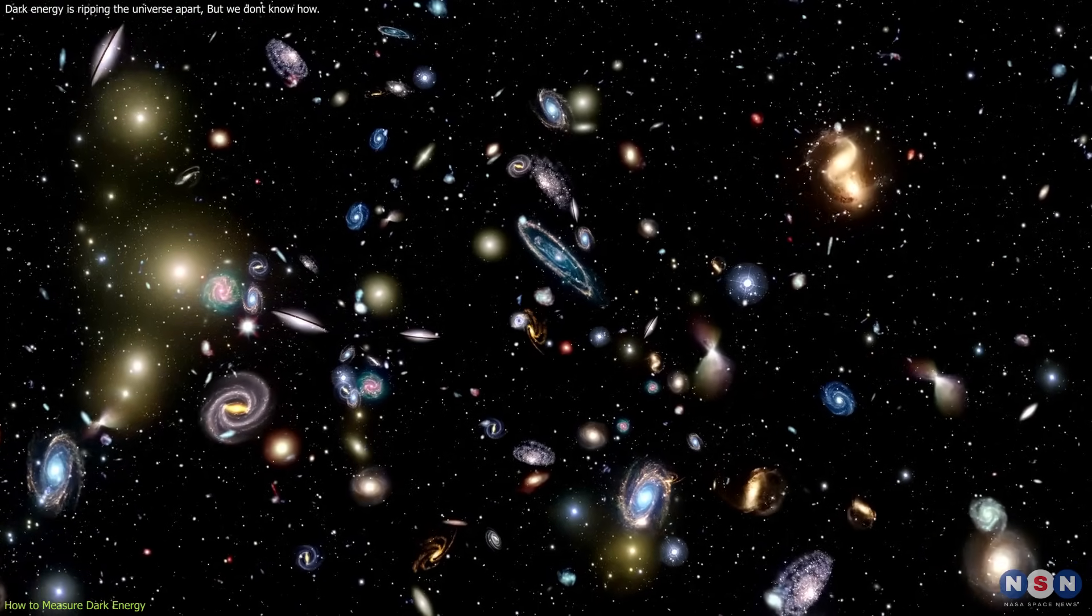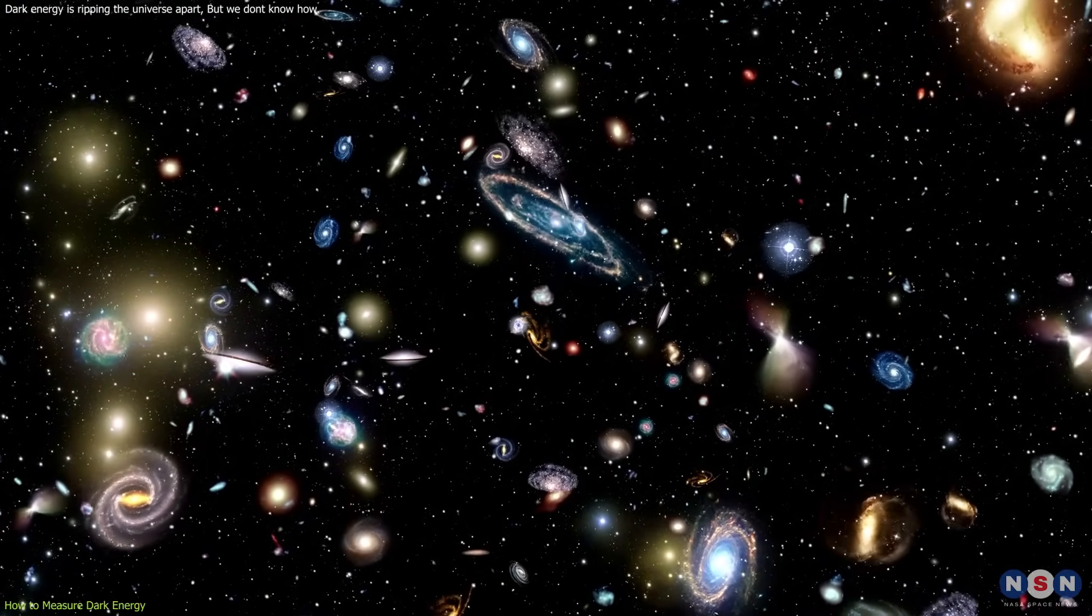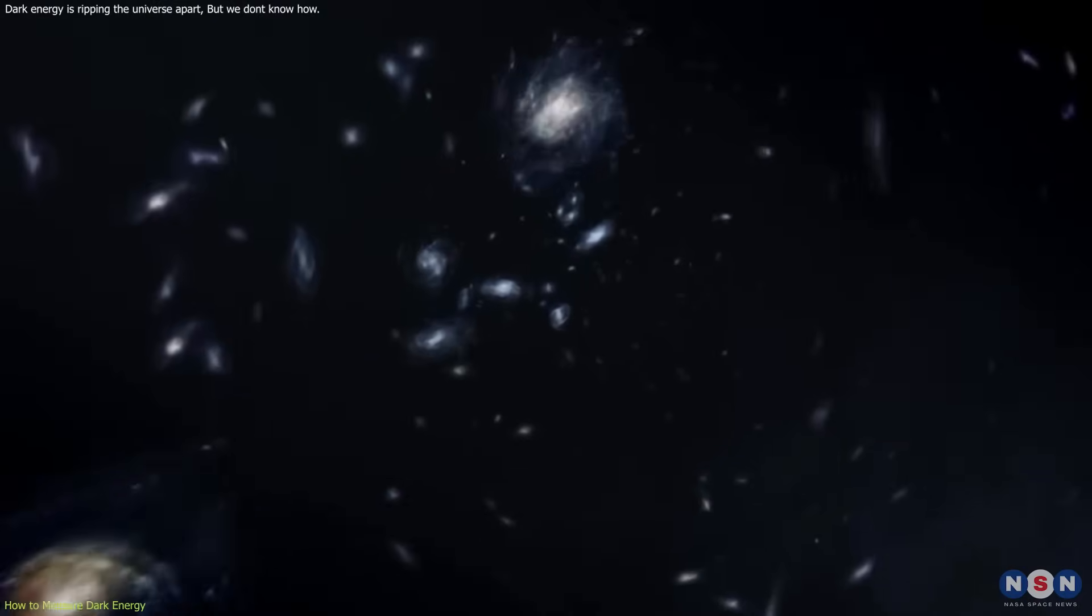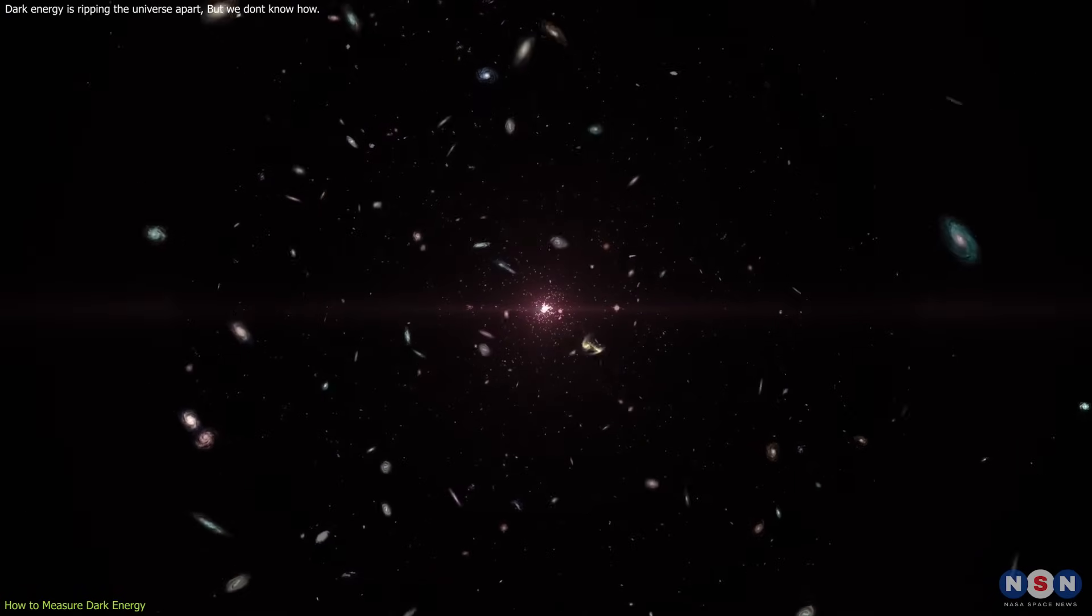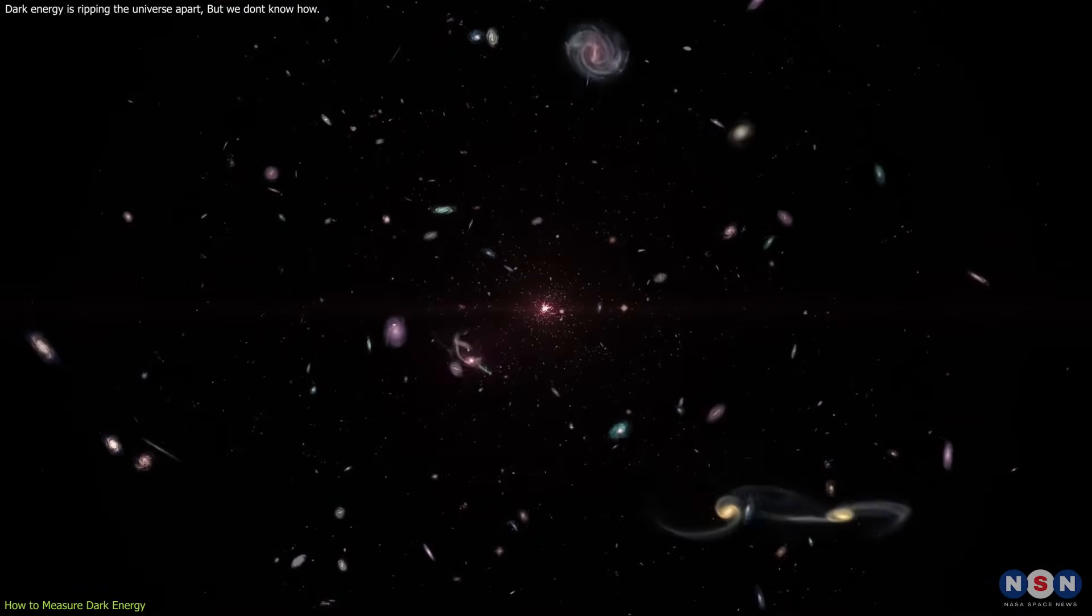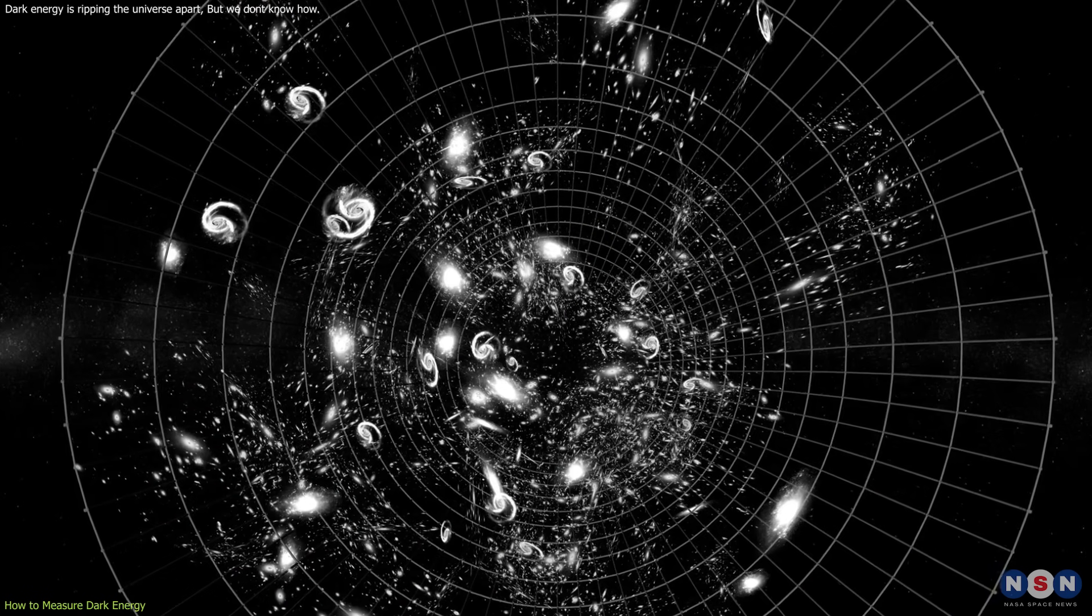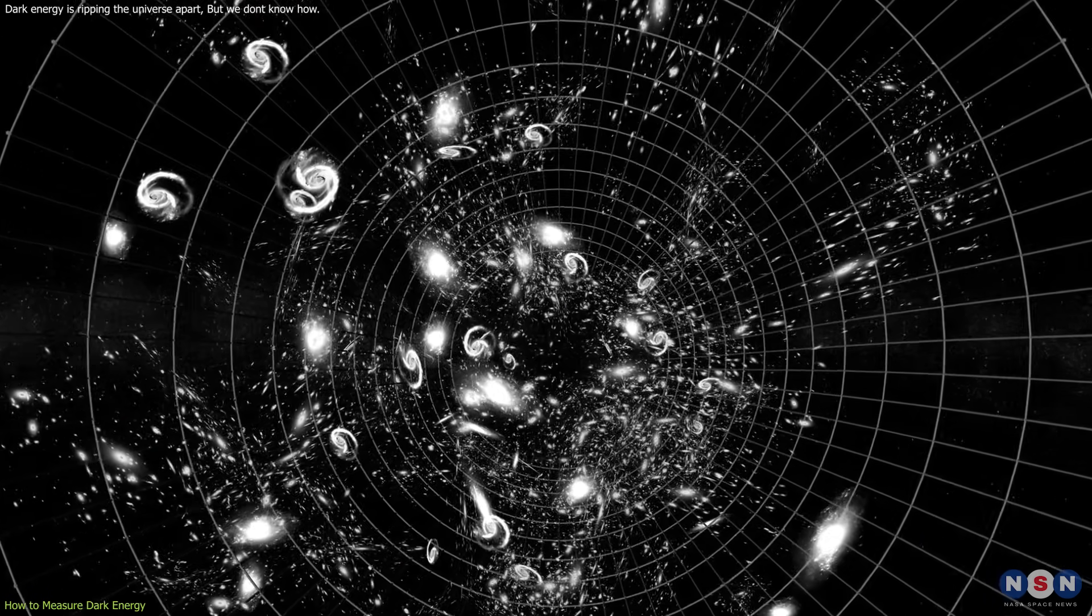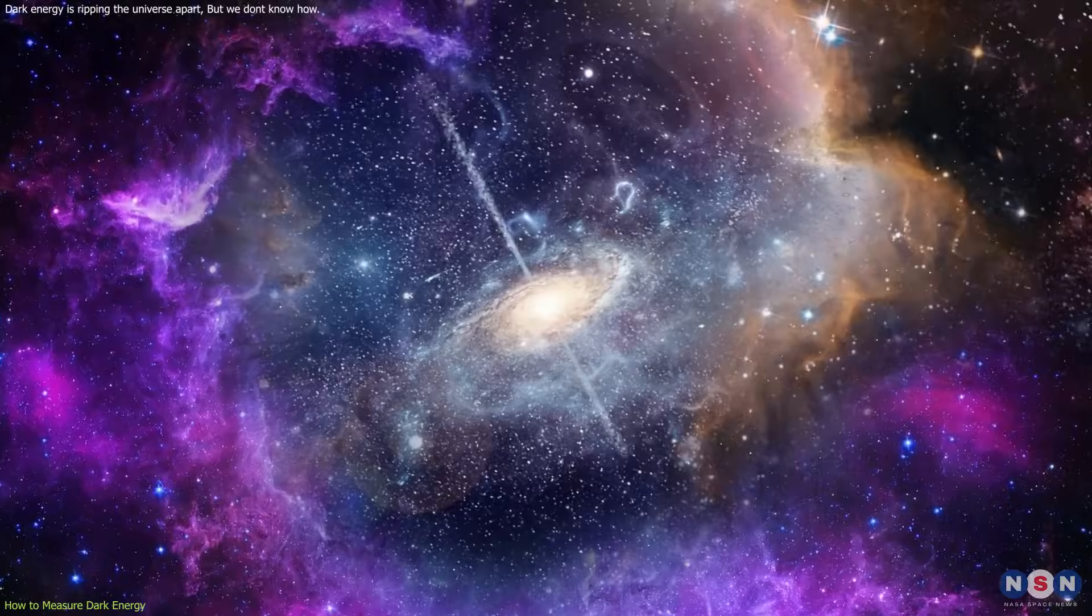Galaxy clustering is the study of how galaxies are distributed in space, and how they move relative to each other. By measuring the distances and velocities of galaxies, we can infer how the universe has expanded over time, and how the gravity of matter has affected this expansion. Dark energy affects galaxy clustering by changing the rate of expansion and the growth of structures in the universe.